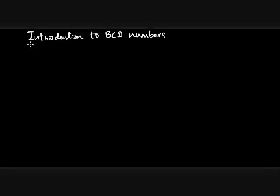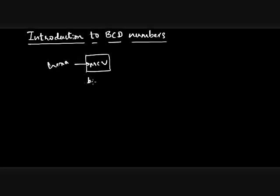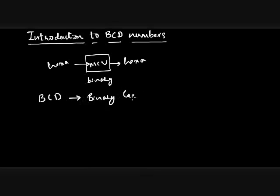In this video we'll talk about BCD numbers and their importance relating to 8051. When we interact with a microcontroller, we input hexadecimal numbers and the microcontroller does its operations in binary and outputs results in hexadecimal. But we humans are not very comfortable using hexadecimal numbers — we find it easier to use decimal numbers. The microcontroller does provide a way to use decimal numbers, but not directly, through the use of BCD numbers, which is the abbreviation of Binary Coded Decimal.